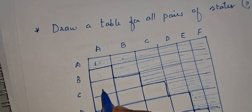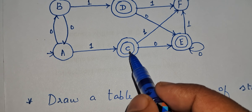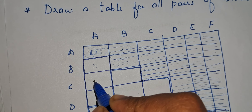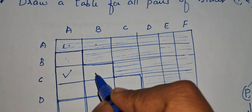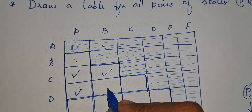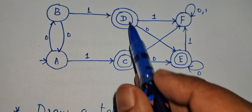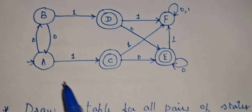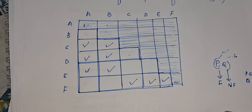Taking cell A, B: here state A and state B are both non-final states, so we cannot mark this cell. Taking cell A, C: A is the non-final state and C is the final state — one is non-final, another is final — so we can mark A, C. Next is B, C: B is non-final, C is final, so we can mark. Then A, D: A is non-final, D is final, so we can mark A, D. B and D — one is non-final, another is final — so we can mark. C and D are both final states, so we cannot mark. A, E: A is non-final, E is final, so we can mark. Similarly check and mark all remaining pairs.